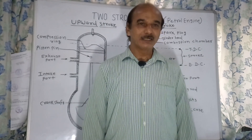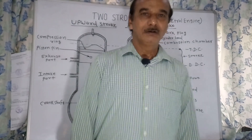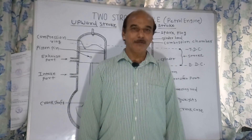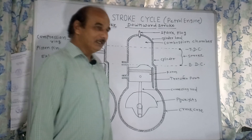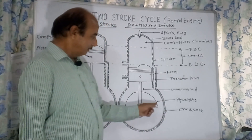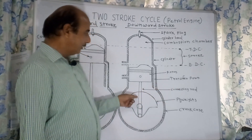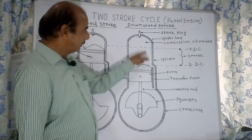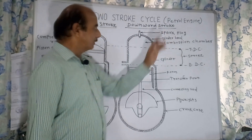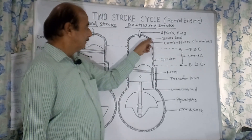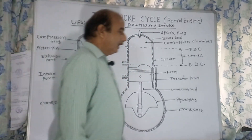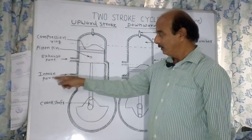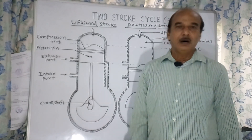The two-stroke cycle of the petrol engine has two strokes: one is the upward stroke and the other is the downward stroke. The parts of the engine include the crankcase, connecting rod, transfer port, piston, cylinder, combustion chamber, head, spark plug, compression rings, piston pin, exhaust port, intake port, and crankshaft.